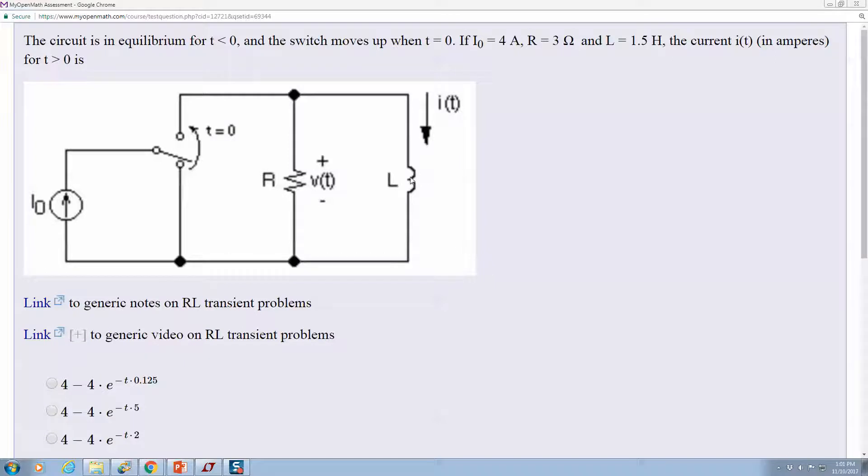When this switch goes high, all the current will be divided between these two devices. Now the trick is, at first all the current will go through the resistor, excuse me, the inductor - none will go through the resistor.